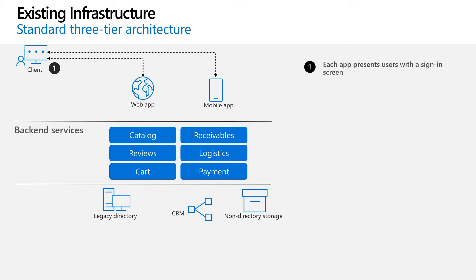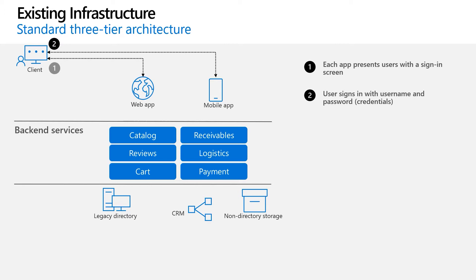There is an on-premise directory that stores user identities that are needed for authentication. There is a CRM system to store the user attributes like credit card information, frequent flyer number, the products you own, and so on. There is a SQL store, Cosmos DB, Blob store, or any similar storage to store and serve either your assets or other application data that's needed by the users.